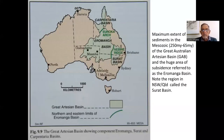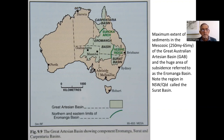Here again is the maximum extent of sediments, essentially in the Mesozoic era, from 250 to 65 million years ago. There are sub-basins like the Carpentaria Basin in the north, in which direction of sea incursions occurred, or the Surat Basin in the east, which is separated by a ridge.